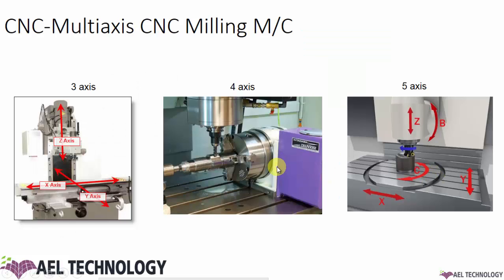Now let us see the different axes on a CNC milling machine. The basic ones are X, Y, and Z. X and Y represent the table movement and Z represents the tool movement. Whenever you attach any new movement or attachment to the machine, that becomes your next axis. If you attach an indexing attachment, that becomes your fourth axis. And if you have a machine whose table itself rotates and the tool head can be tilted to some angles, those become your fourth and fifth axes.